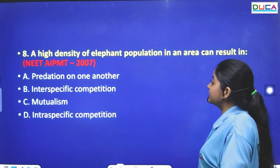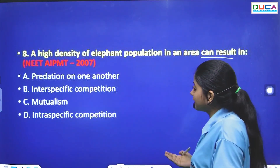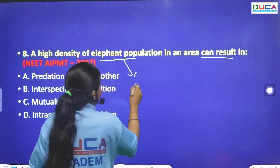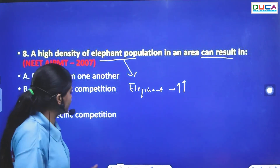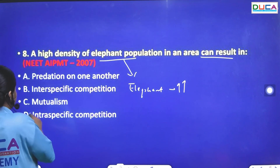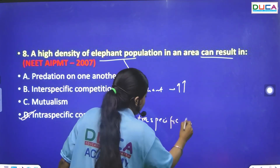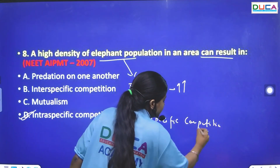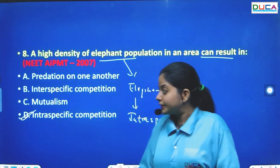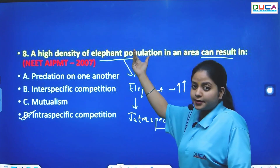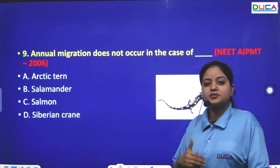The next question: High density of the elephant population in an area results in what? If the population of one species — elephants — has significantly increased, then they compete among themselves. This is called intraspecific competition. If there are two different species competing, it would be interspecific competition.